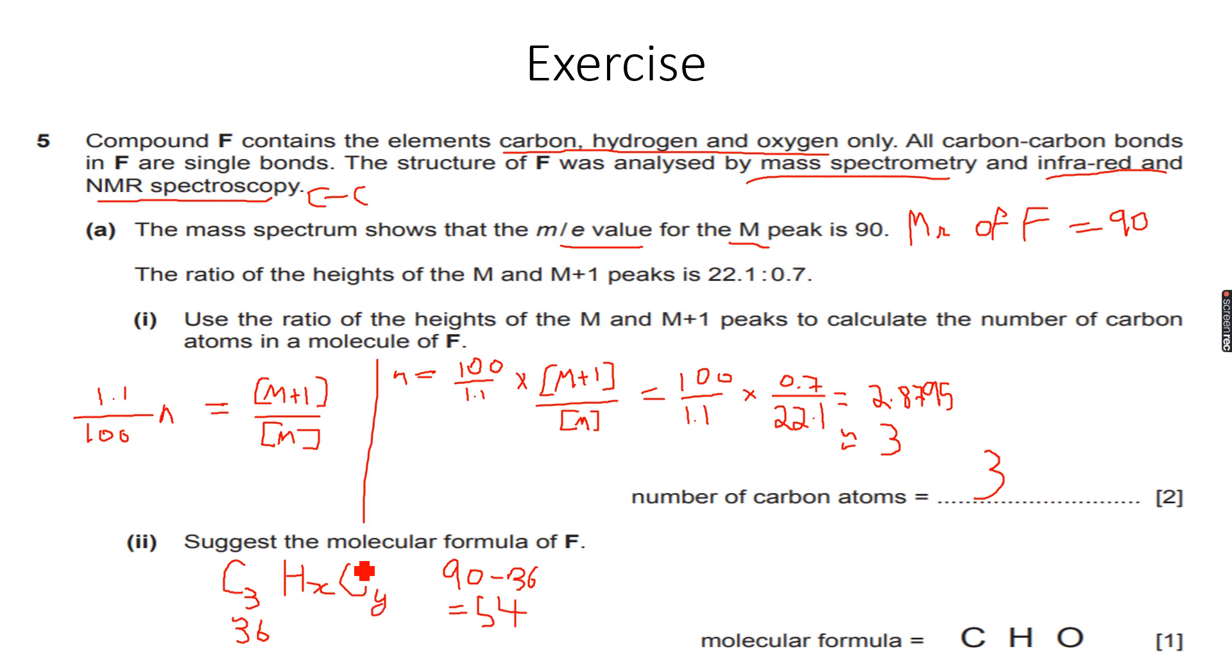We might have more than one oxygen, so let's put one oxygen here. I can write three here because I know there are three carbon atoms. Let's subtract one oxygen from this, which gives us 38.